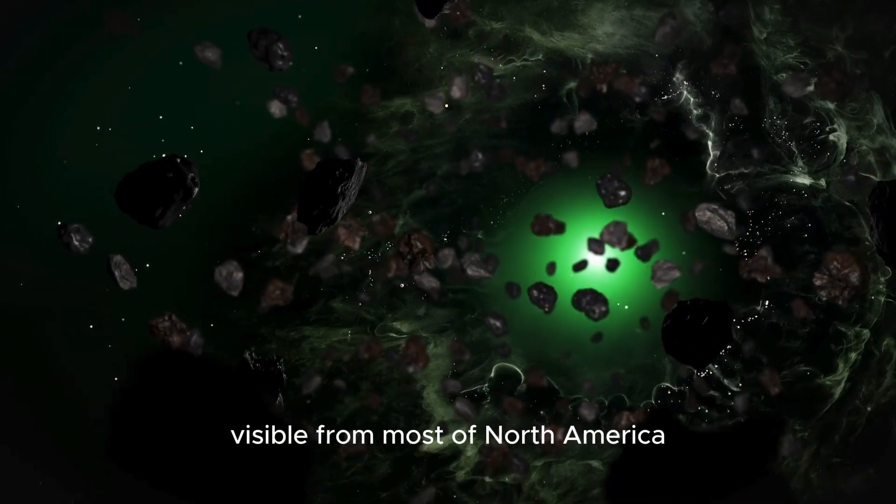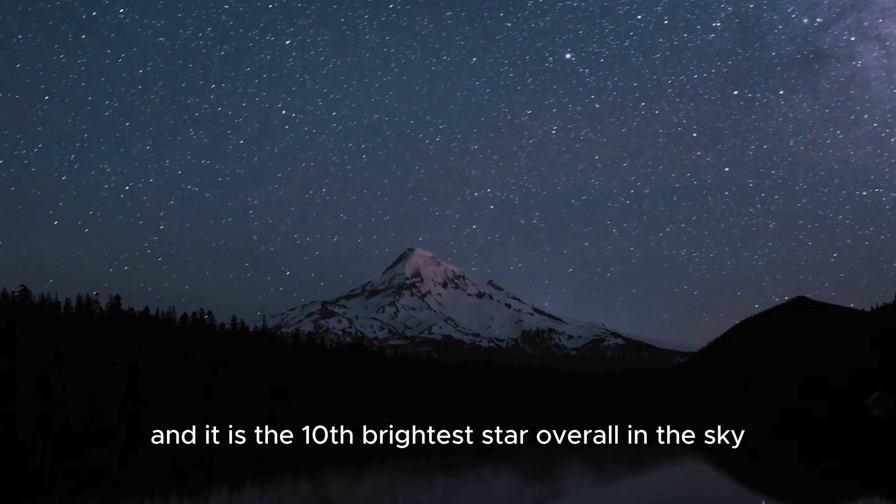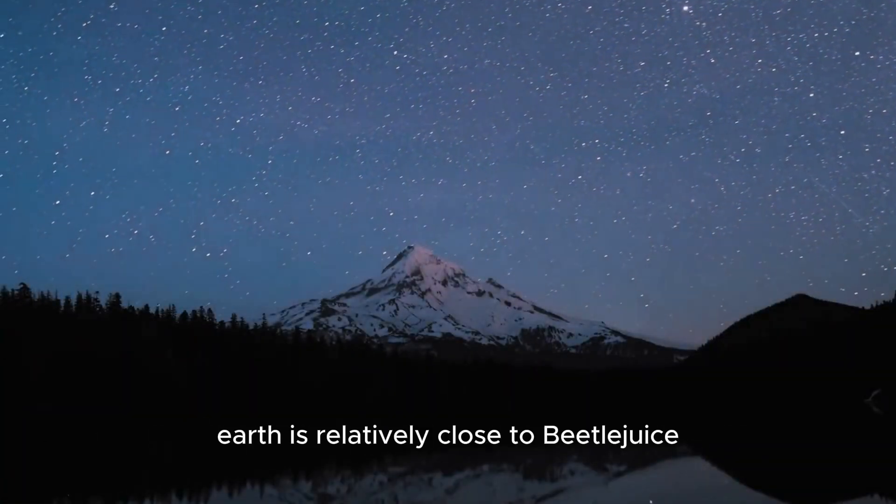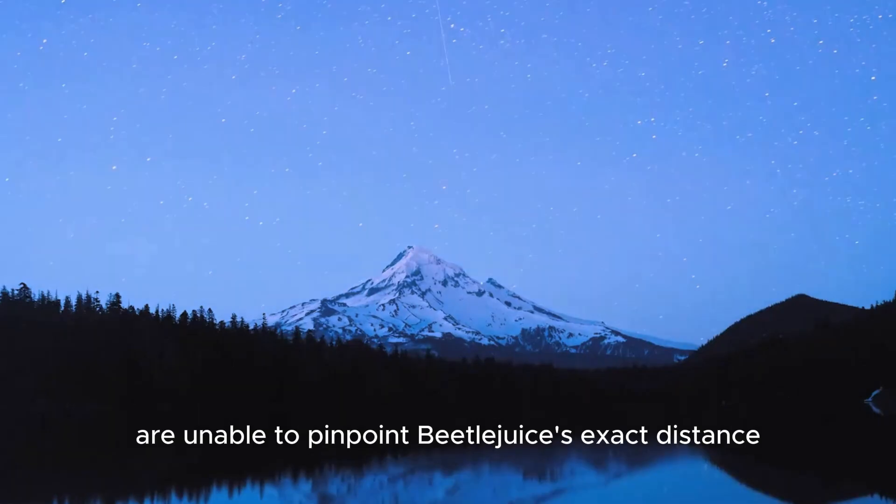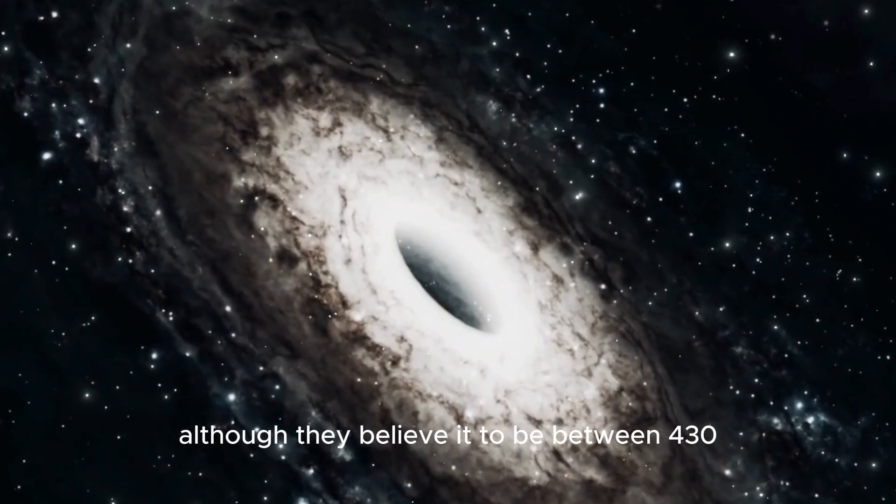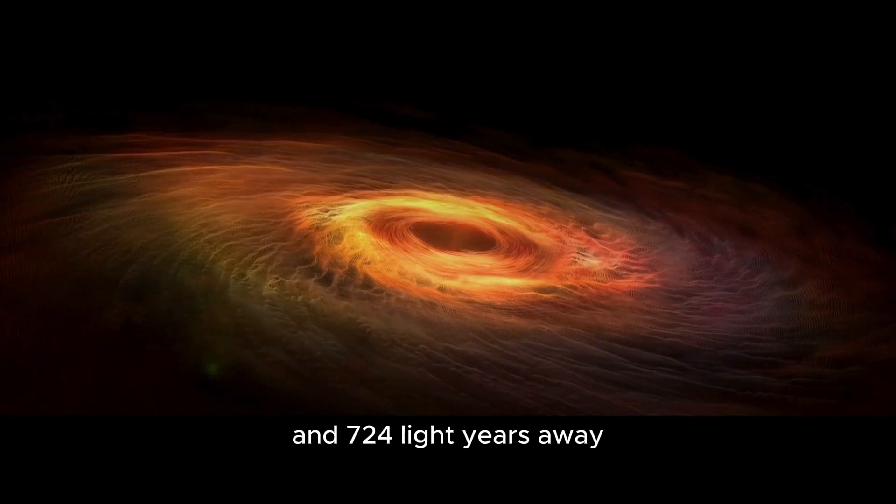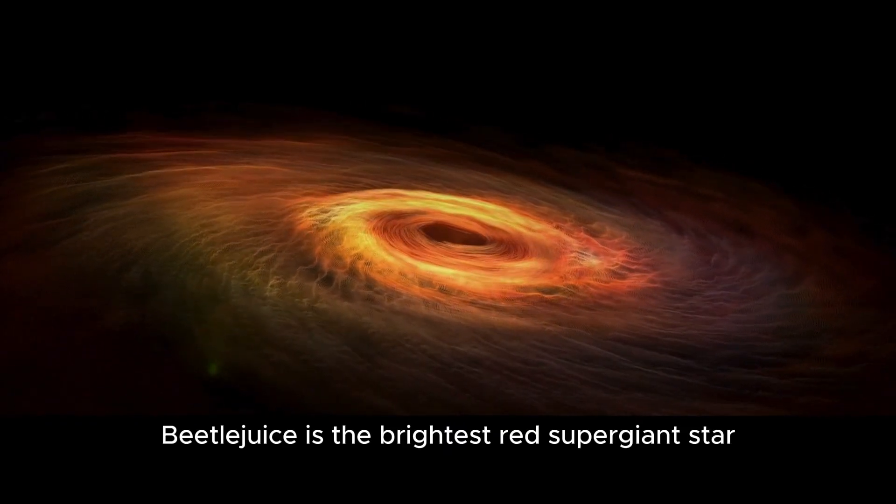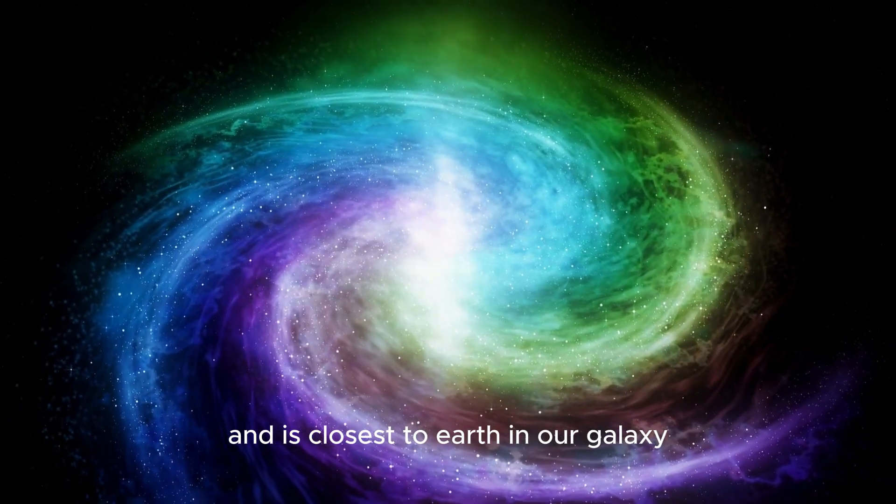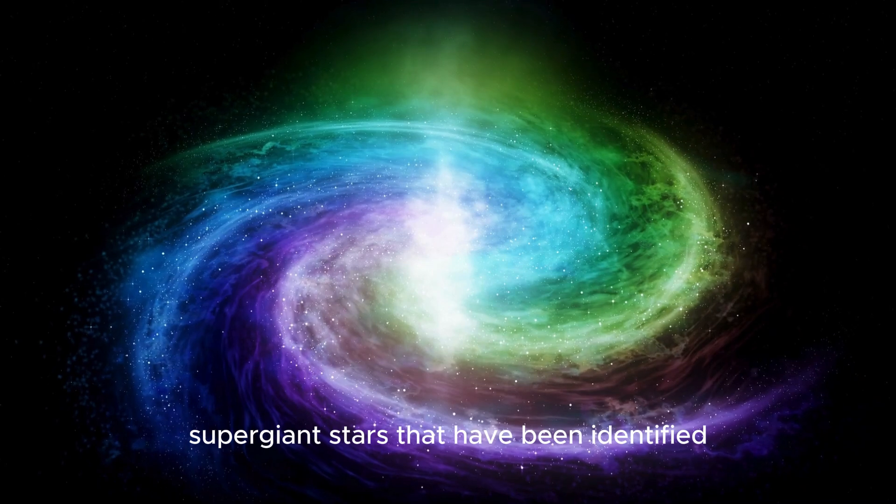Betelgeuse is the seventh-brightest star visible from most of North America, Europe, and Canada, and the tenth-brightest star overall in the sky. Earth is relatively close to Betelgeuse. Astronomers believe it to be between 430 and 724 light-years away. It's the brightest red supergiant star closest to Earth in our galaxy.